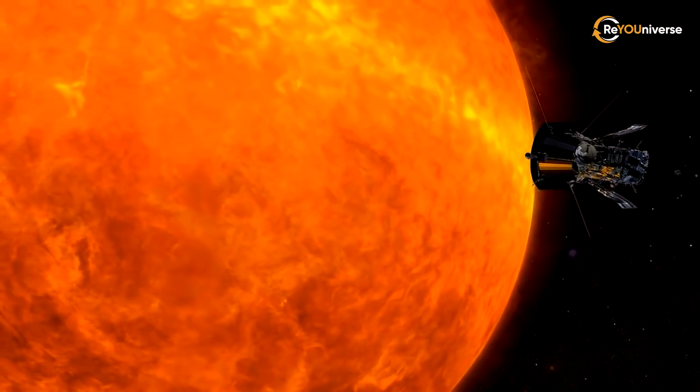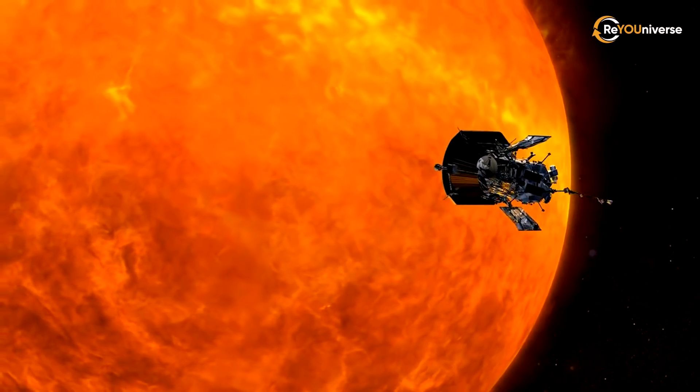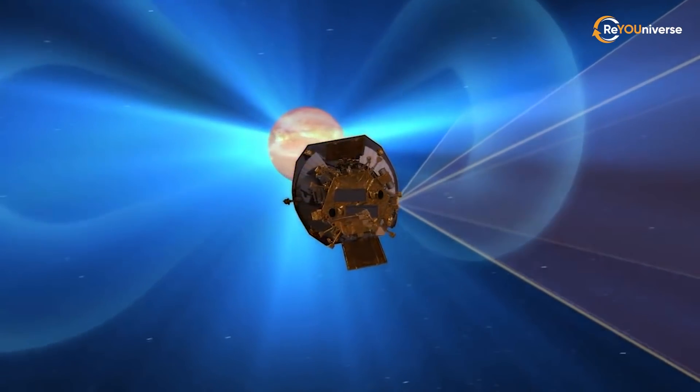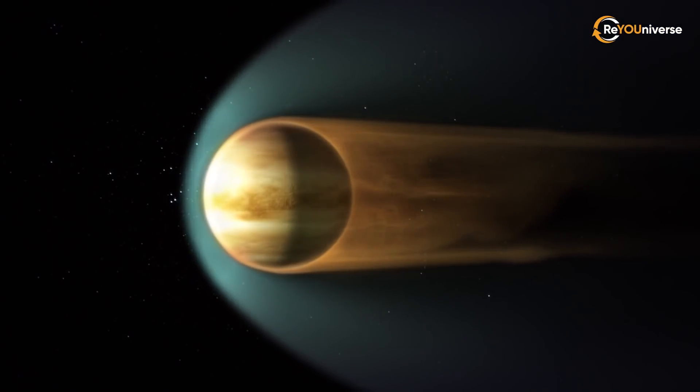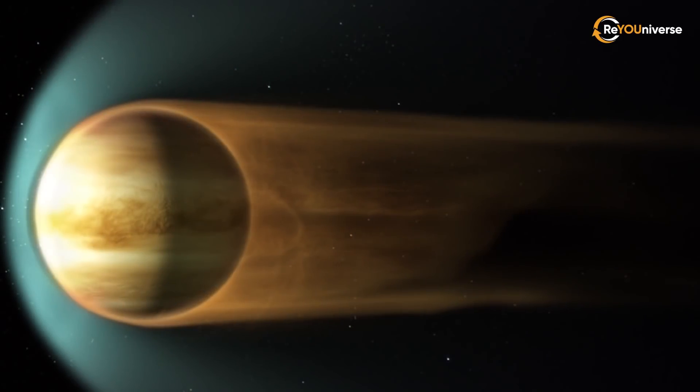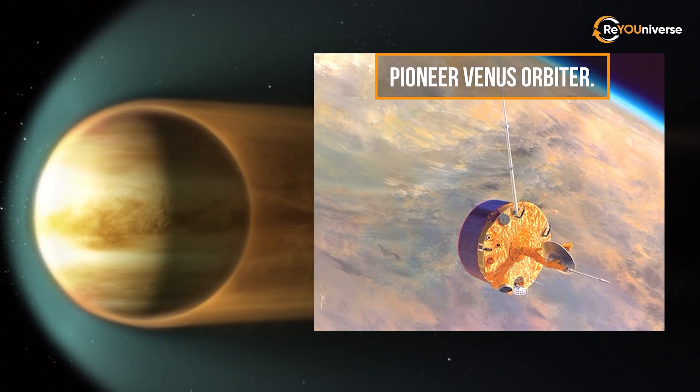11 seconds later, NASA's Helios 2 probe orbiting the sun registered a second flare. In a few minutes, it also reached Venus, where it was registered by the American probe Pioneer Venus Orbiter.